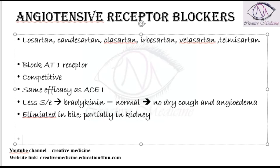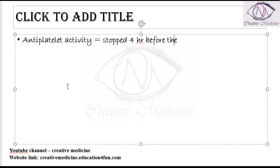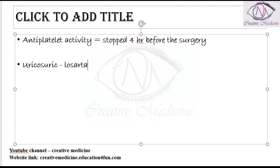One more important point is that angiotensin receptor blockers have antiplatelet activity, so they should be stopped 24 hours before surgery. They are also uricosuric. Especially losartan is uricosuric, making these drugs useful in patients who have both gout and hypertension.